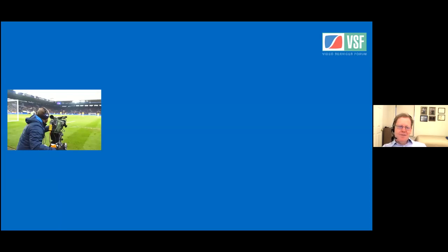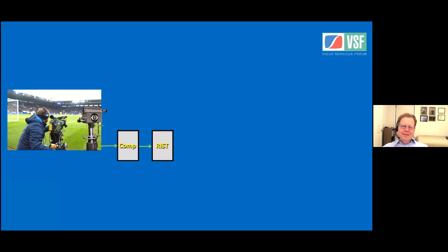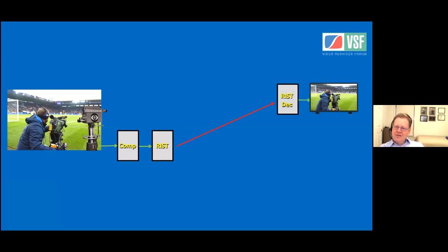How would you use RIST in the cloud? In the traditional setup you have your remote site — you go into your compression, into your RIST encoder, and to your reception site. But we don't have to do it that way, and there are advantages in not doing so. We can go through a data center: using software at the data center, you can do a RIST transmission to the site, and you can go to multiple sites from there.